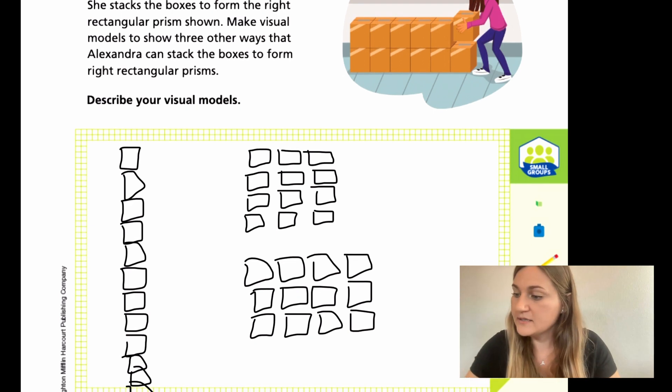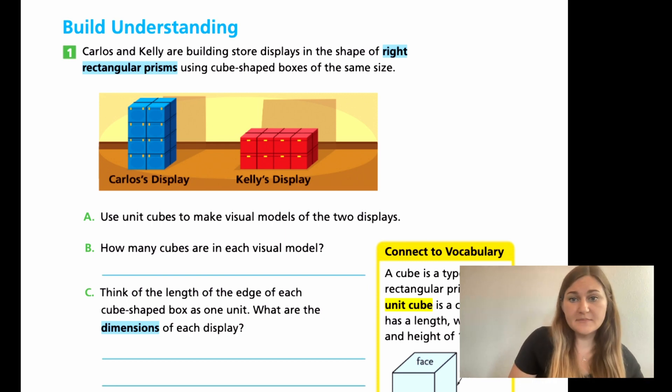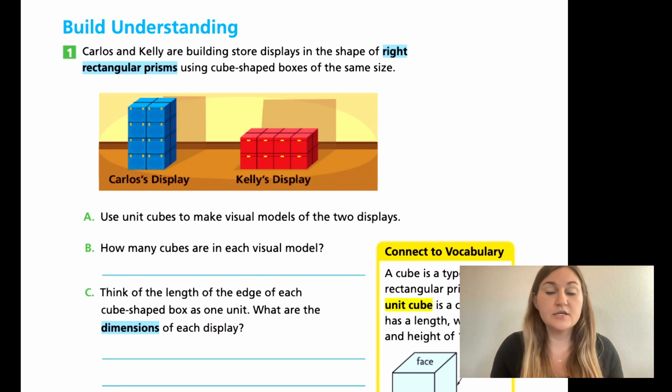So let's go ahead and jump onto the next page for the build your understanding. Number one says, Carlos and Kelly are building store displays in the shape of right rectangular prisms using cube-shaped boxes of the same size. So it tells you already that these boxes are the same size. It doesn't give you inches, meters, feet. It's just unit cubes. When it says same size, it just means unit. The displays are shown in blue is Carlos and red is Kelly. I'm going to go ahead and have you pause the lesson and try this entire page. See how far you can get and then come back and we'll go through it together.